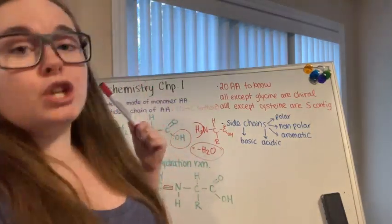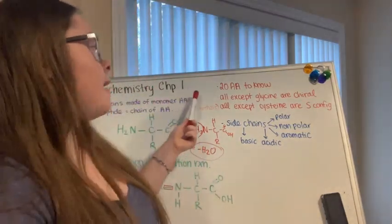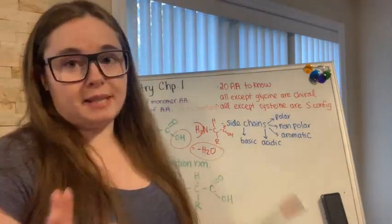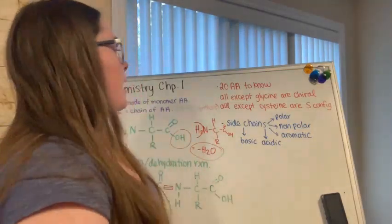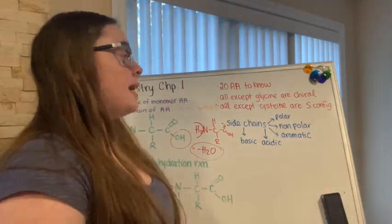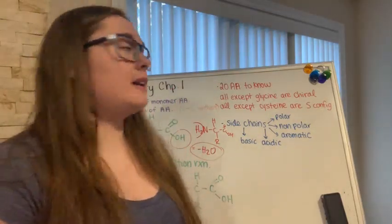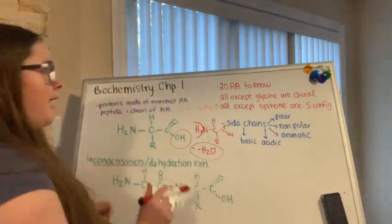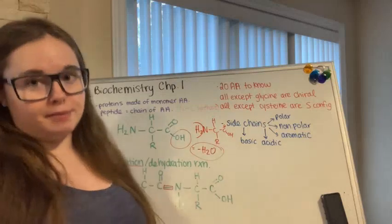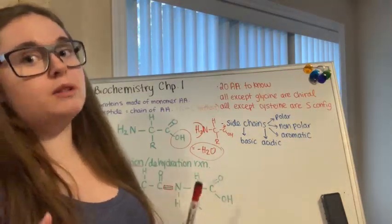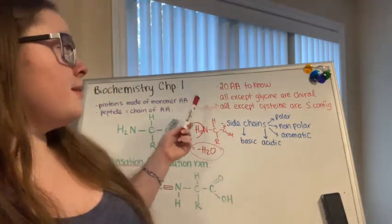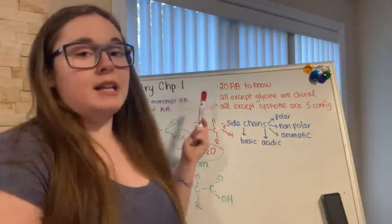There are 20 amino acids that you need to know for the MCAT. All of those amino acids, except for glycine, are chiral, meaning their alpha carbon is connected to four different substituents. Glycine is the only amino acid that does not have that — all amino acids except glycine are chiral.